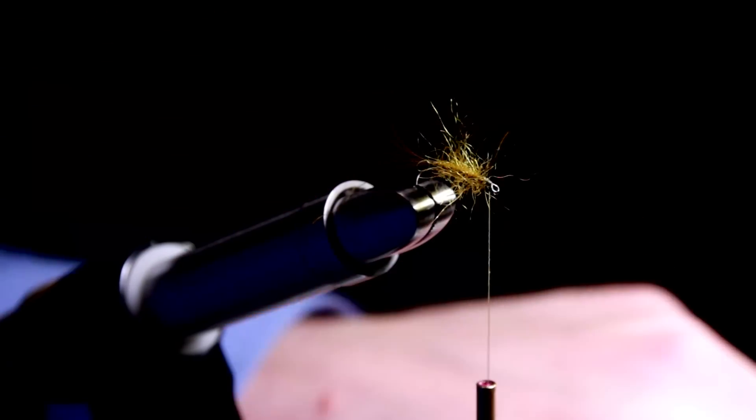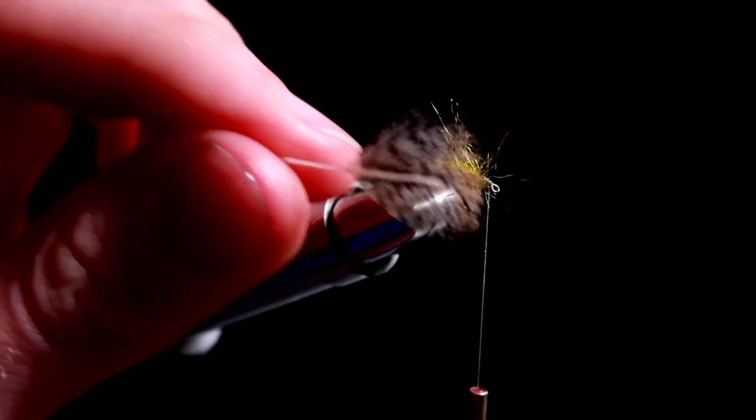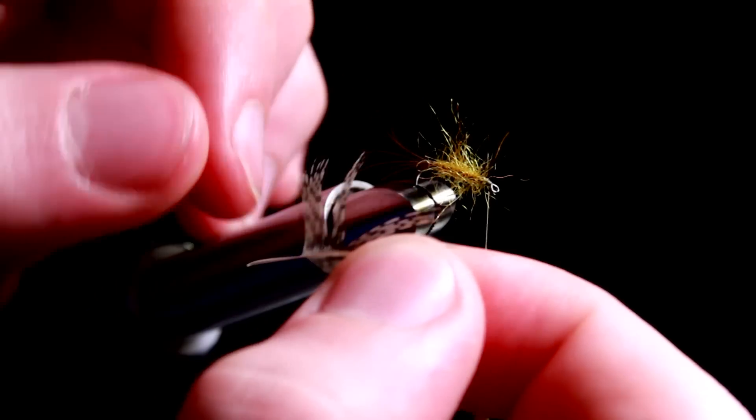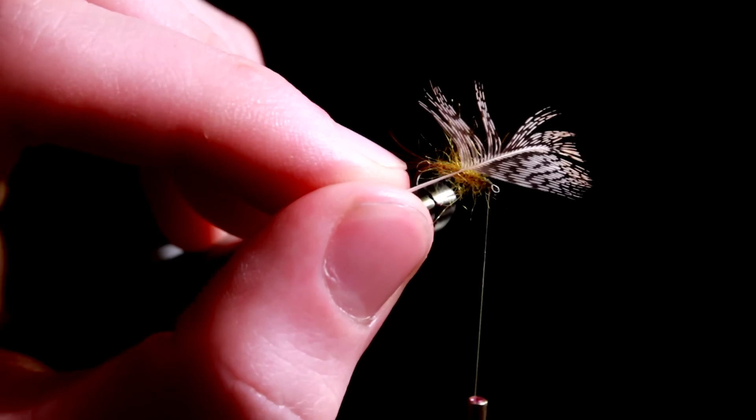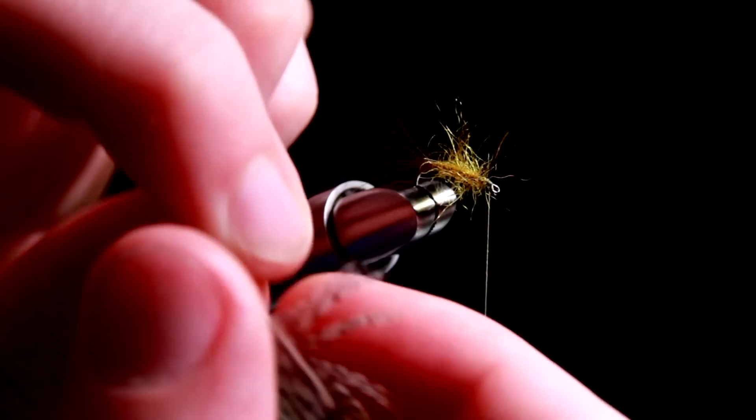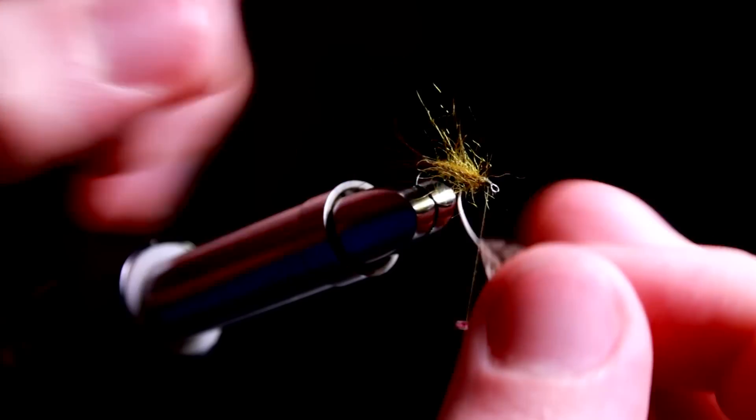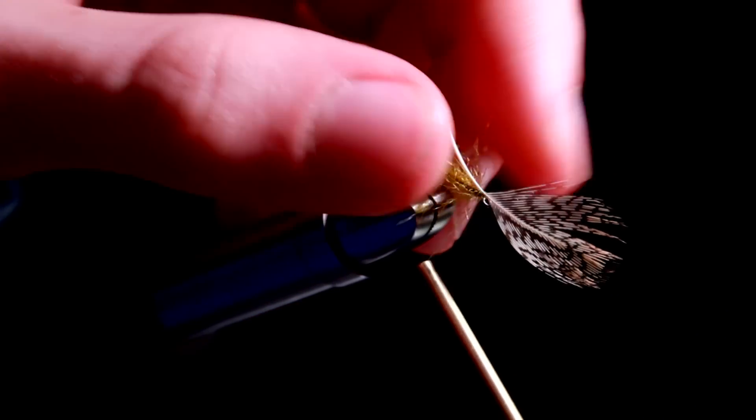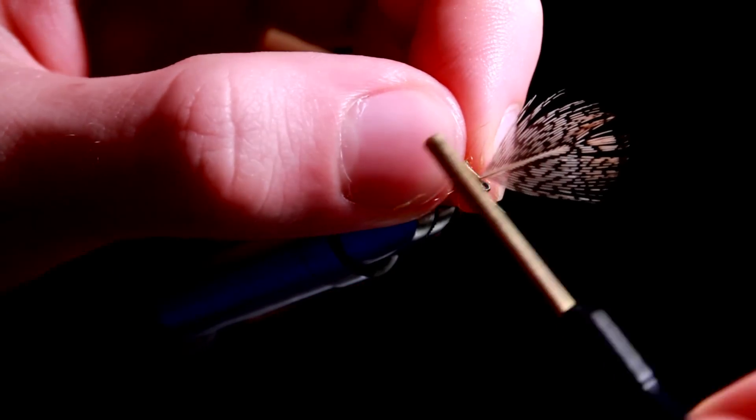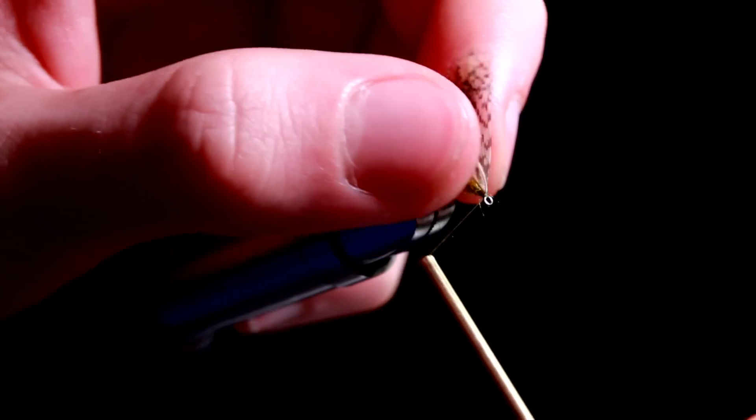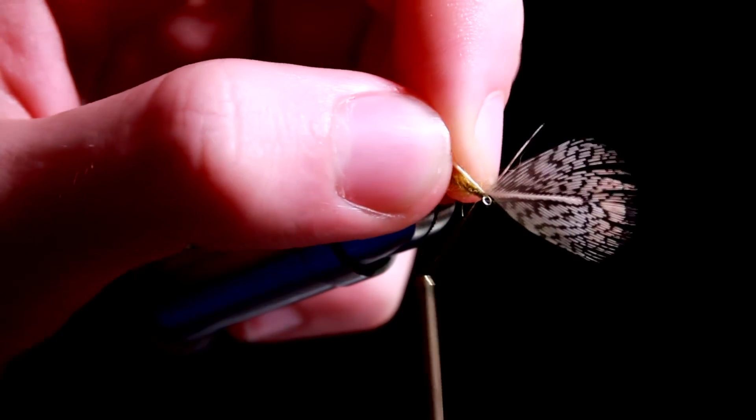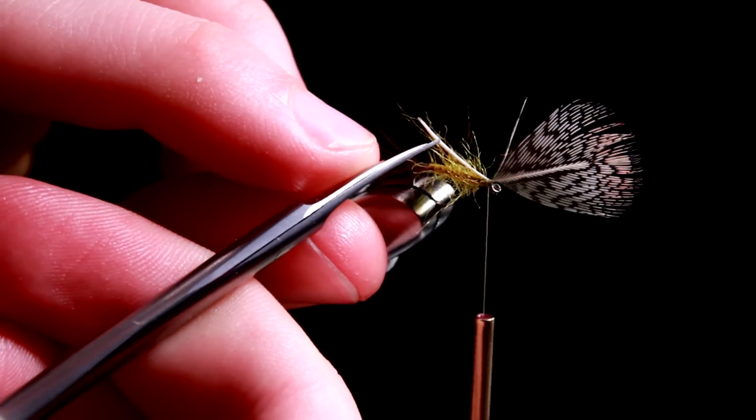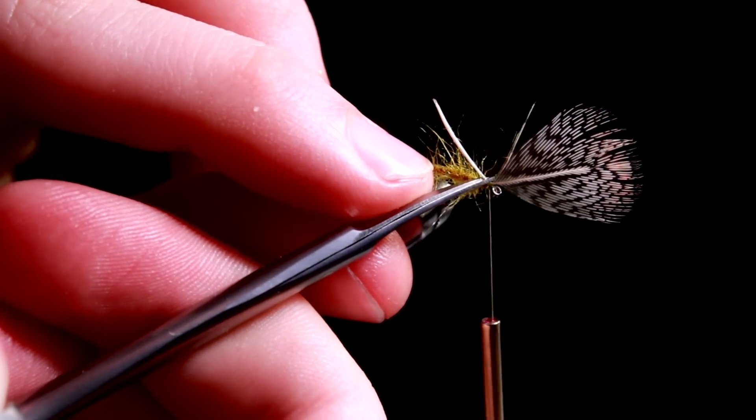Then select a hackle feather. Most partridge hackles have fairly long fibers, but about a body length is sufficient for a flimf. Then you tie it in, and I always tie all my hackles by letting the feather point towards the hook eye, then going back, securing the feather. I cut the stem off, like that.